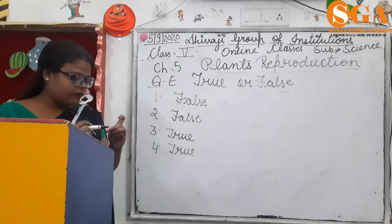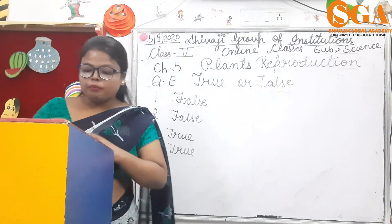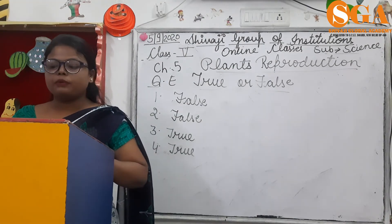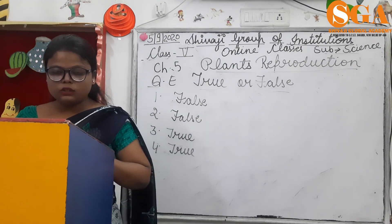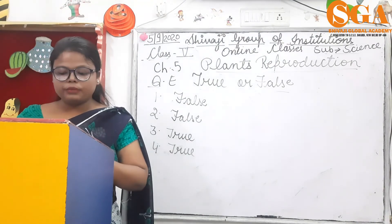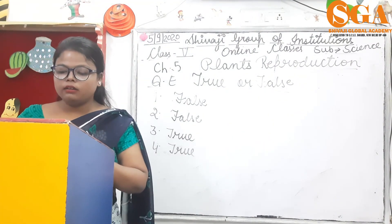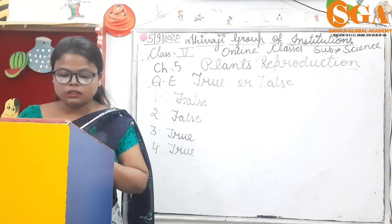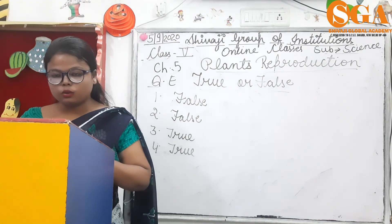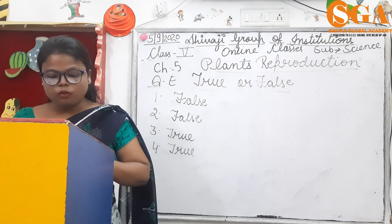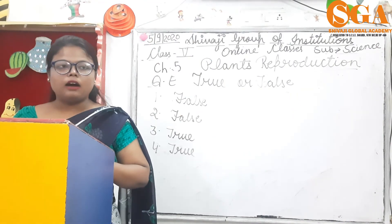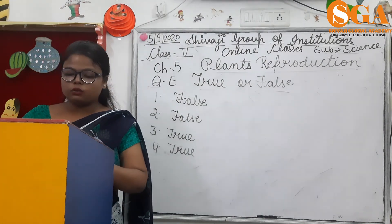Kids, here are the true and false answers. Potatoes grow underground and new plants can be grown from its root — false. All seeds grow immediately when we put them in soil — false. Plants scatter their seeds for proper growth — true. Fruit and seed formation occur after fertilization — true.